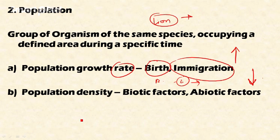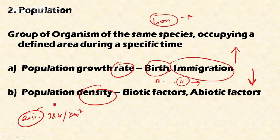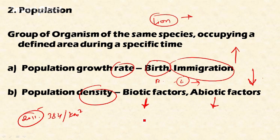Another parameter is population density — the number of individuals living in a particular area, expressed as number per square kilometer. For example, the population density of India is 384 people per square kilometer according to the 2011 census. Population density is influenced by both biotic factors like predators and other living things, and abiotic factors like rainfall, water, temperature, and humidity.